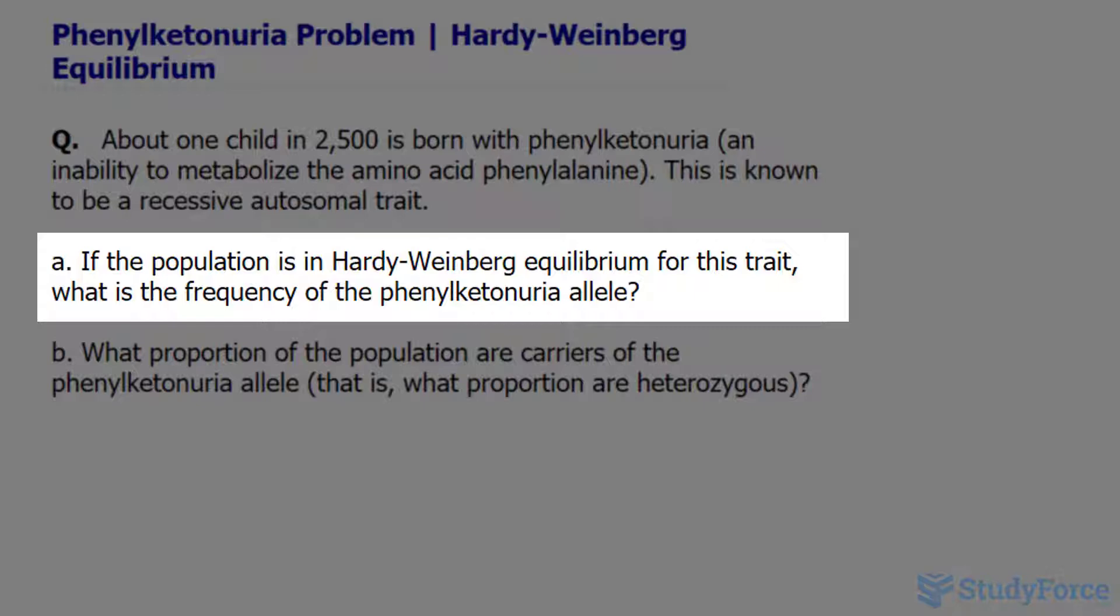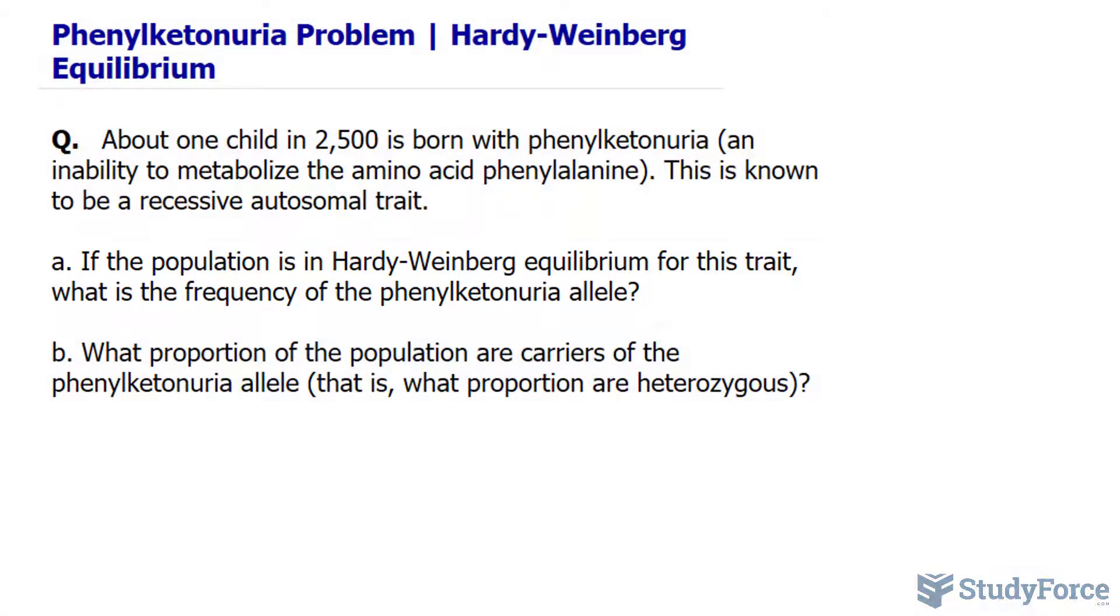So you only get the condition if your genotype consists of two alleles that are both recessive. In other words, you would have to have inherited this defective allele from both parents in order to have this trait. In the question, they're telling us that 1 in 2500 possess this trait. So if we call this gene R for dominant and little r for recessive, 1 out of 2500 are little r and little r.